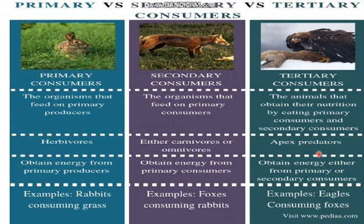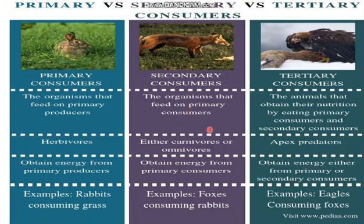Primary consumers obtain energy from primary producers. The energy produced by plants through photosynthesis using sunlight is gained by primary consumers when they eat the plants. Secondary consumers get energy from the primary consumers, and tertiary consumers obtain energy from either primary or secondary consumers — they can eat either and get energy from them.